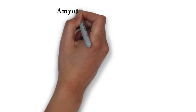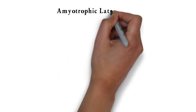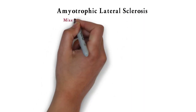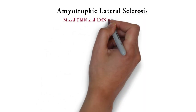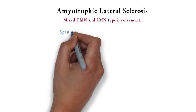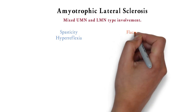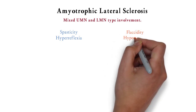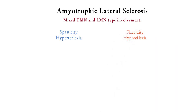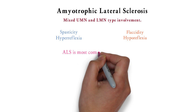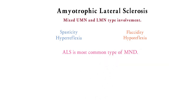Now we will come to the next type, which is amyotrophic lateral sclerosis (ALS). Here there is a mixed upper motor neuron and lower motor neuron type of involvement. So some groups of muscles may show features like spasticity and hyperreflexia due to UMN involvement, and some may show features like flaccidity and hyporeflexia due to LMN involvement. ALS is the most common type of MND.